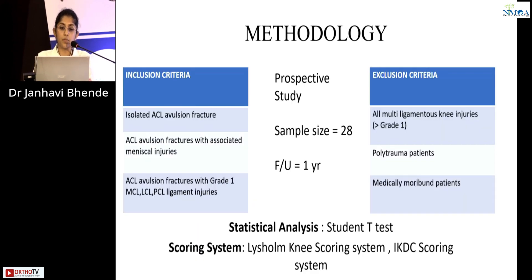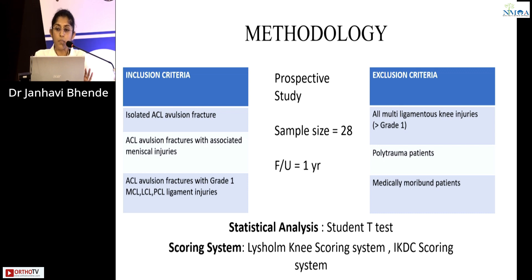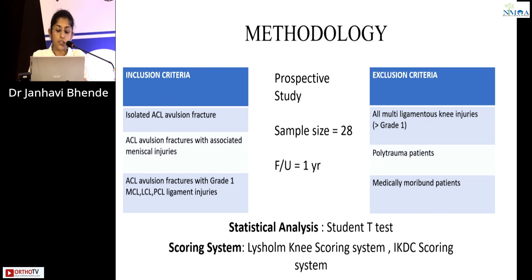Ours was a prospective study with a sample size of 28. We included all isolated ACL avulsion fractures, ACL avulsion fractures with associated meniscal injuries, and ACL avulsion fractures with grade 1 MCL, LCL and PCL ligament injuries. All multi-ligamentous knee injuries higher than grade 1, polytrauma patients and medically moribund patients were excluded. Patients were followed up for one year. Statistical analysis was done by the Student T-test, and the Lysholm and IKDC scoring systems were used for pre-op and post-op analysis.